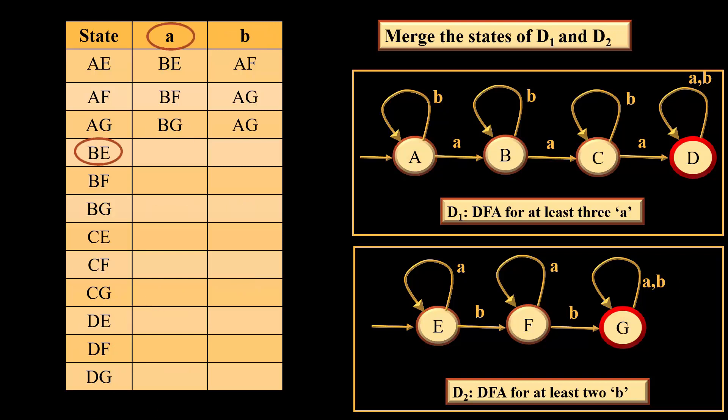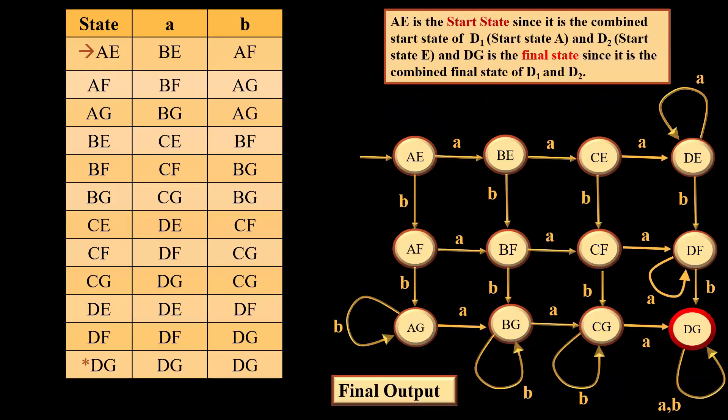We start with the states of BE. BE on A gives us CE and BE on B gives us BF. Likewise we will continue and we will generate the entire table. Once the entire table has been generated, we will draw the DFA corresponding to the table which has been generated. So this is the final DFA which we get.